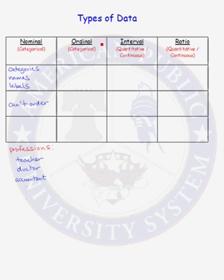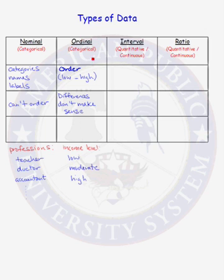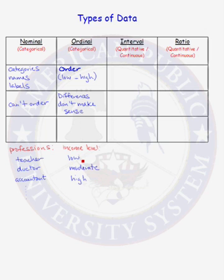Now let's talk about the ordinal data type. When you hear ordinal, the word that should come to mind is order. In the ordinal data type, there is a natural ordering to your variable or your data, but differences do not make sense for this type of data. For instance, let's take income level. A person's income level can be low, moderate, or high. There is a natural ordering from low to high, but we cannot take the difference of moderate income and low income. So this is an ordinal type of data.